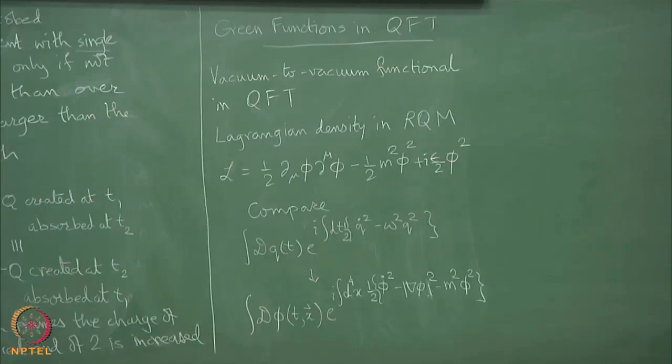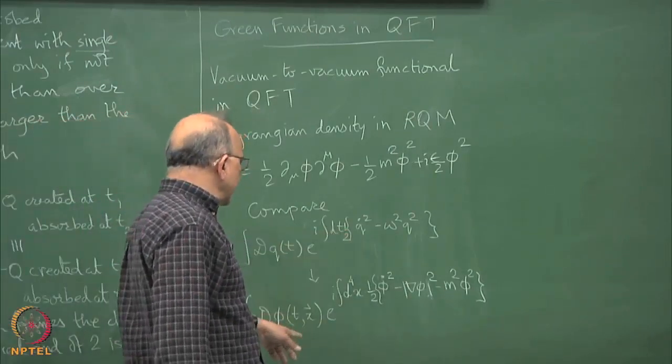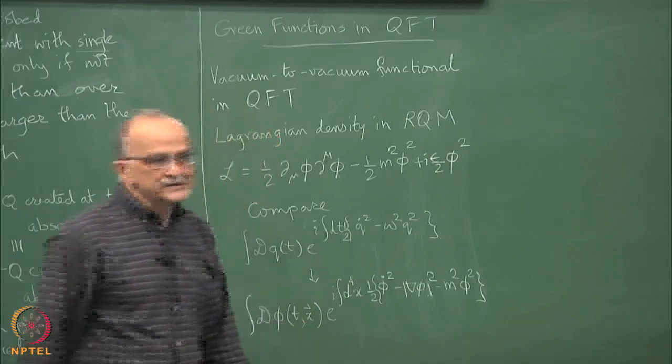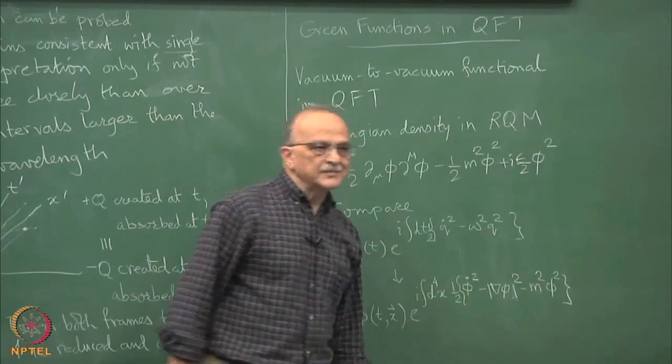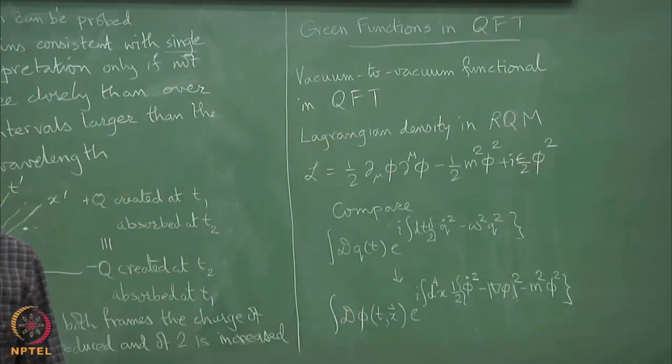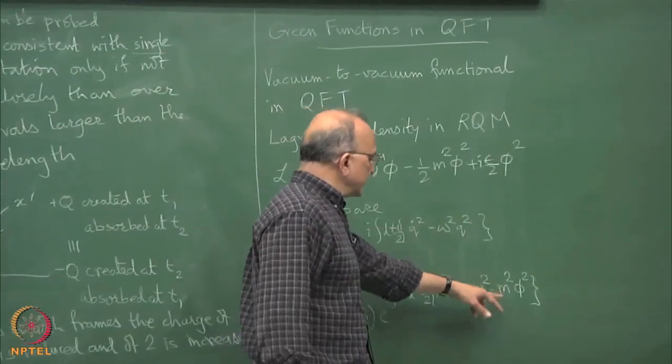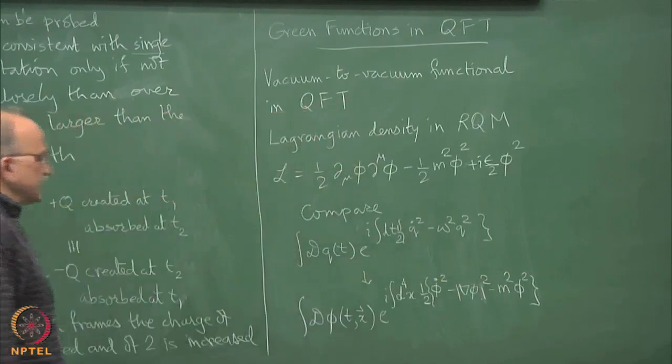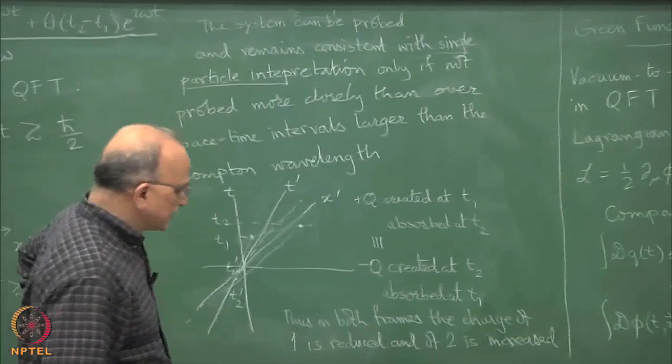Instead of considering a 1 coordinate problem in 1 time direction, I consider a 1 coordinate problem but as a function of 4 dimensional space time with the Minkowskian metric. The analogy is complete because the omega square term looks like the mass square term and all the methods will look identical.